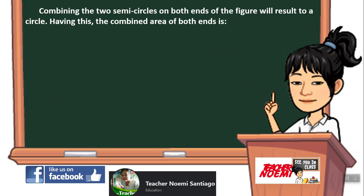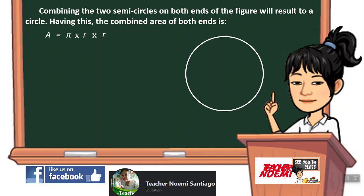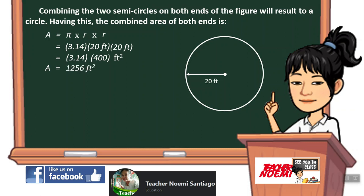Combining the two semicircles on both ends of the figure will result in a circle. The combined area of both ends is a circle. The area of a circle is pi times r squared. If the radius is 20 feet, we have 3.14 times 20 feet times 20 feet, which is 400 square feet. 3.14 times 400 square feet equals 1,256 square feet.